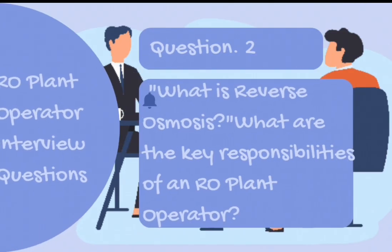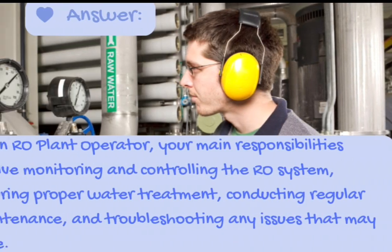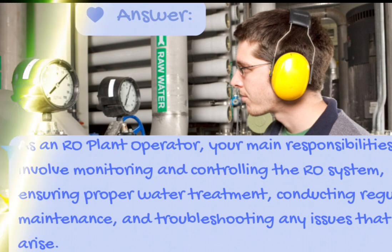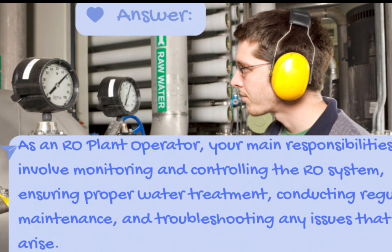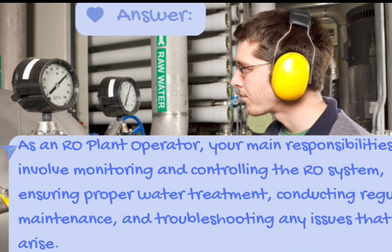Question number 2: What are the key responsibilities of an RO plant operator? Answer: As an RO plant operator, your main responsibilities involve monitoring and controlling the RO system, ensuring proper water treatment, conducting regular maintenance, and troubleshooting any issues that may arise.